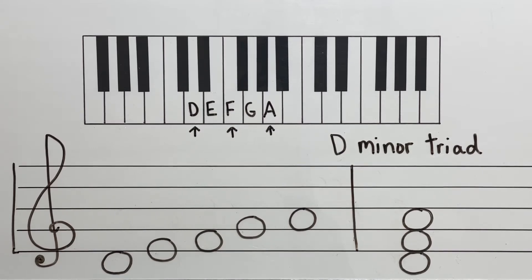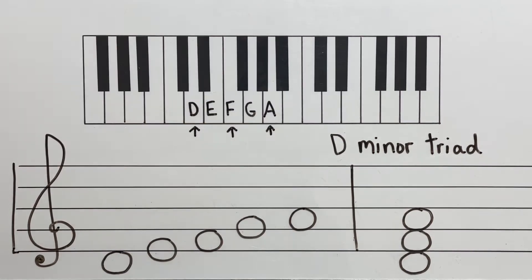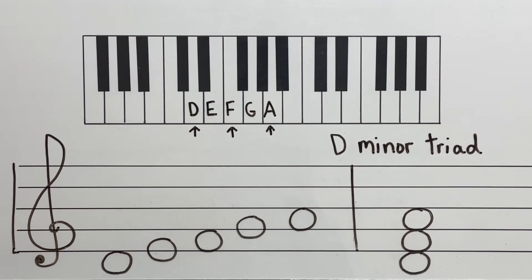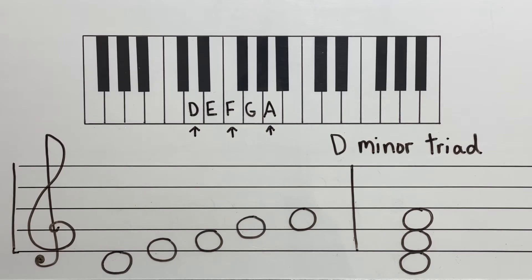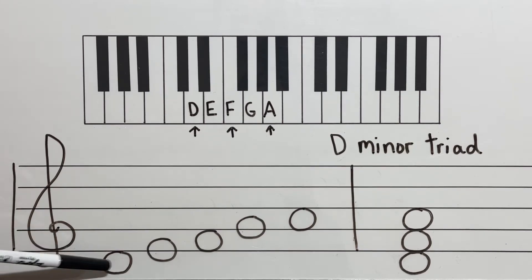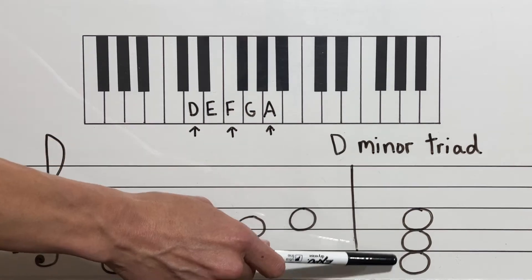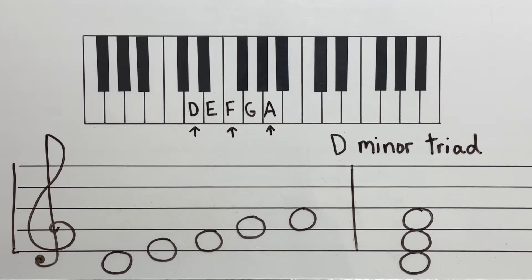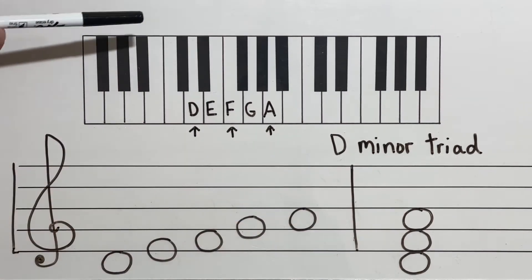Our D minor triad first starts with our D minor five finger scale. We have D, E, F, G, and A, with arrows on my root, my third, and my fifth. So I will be playing D, F, and A all at the same time — that's my D minor triad. Down here using my treble clef, I write D, E, F, G, and A. I take my root, my third note, and my fifth note and do my stack — I have space, space, space for this triad. In D minor I don't have any accidentals. When I play my D minor triad on the piano, I'm going to play D, F, and A.